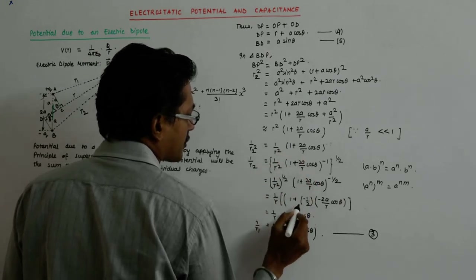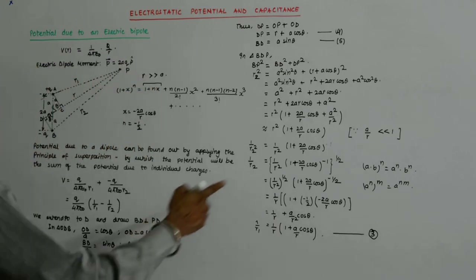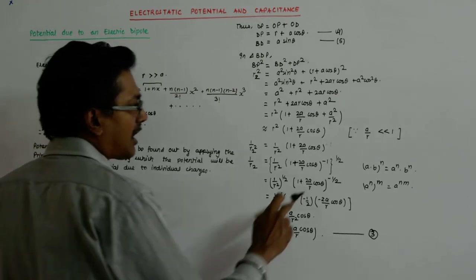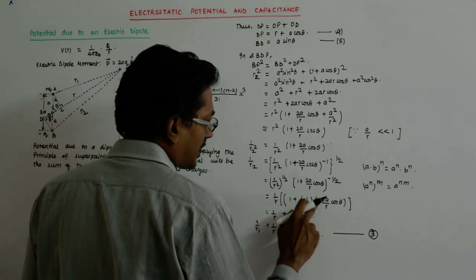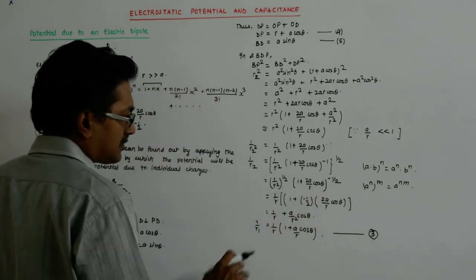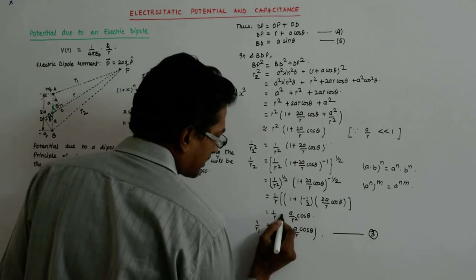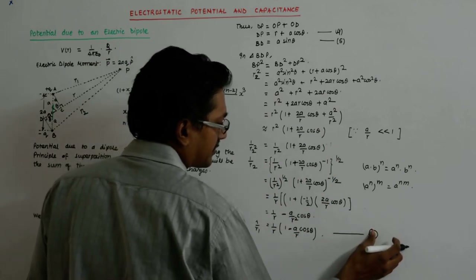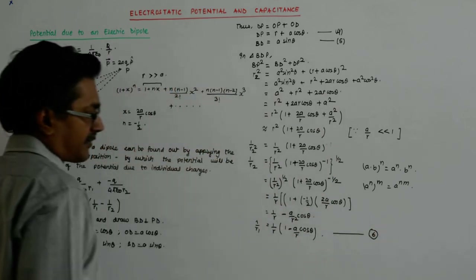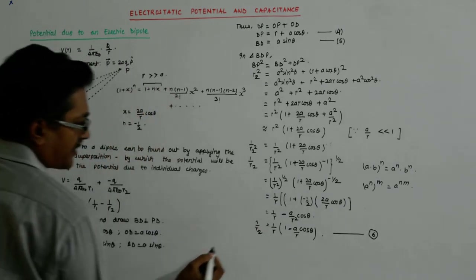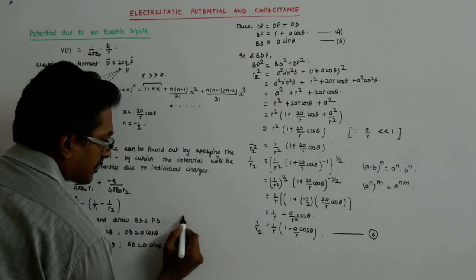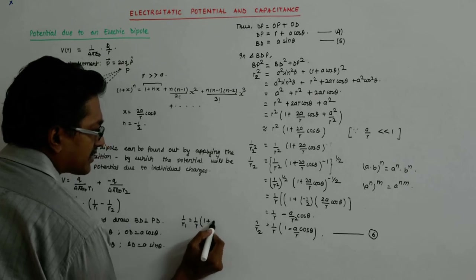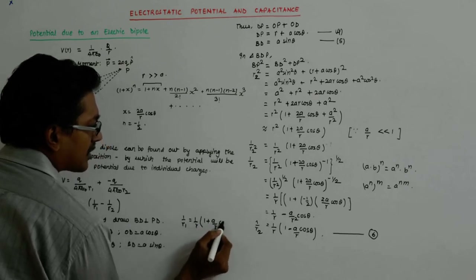This is nothing but a repetition of the same expansion. In this expansion, x becomes positive 2a upon r cos theta, and n still remains minus half. So it becomes 1 upon r into 1 minus a upon r cos theta. So 1 upon r2 equals 1 upon r into 1 minus a upon r cos theta.